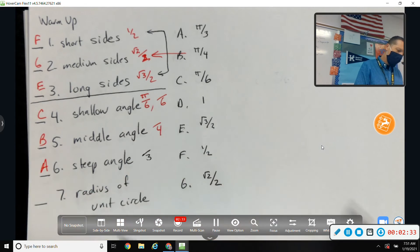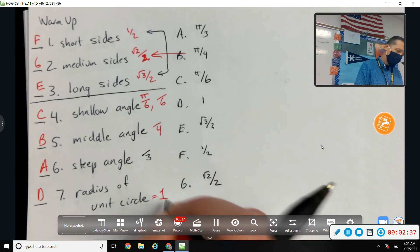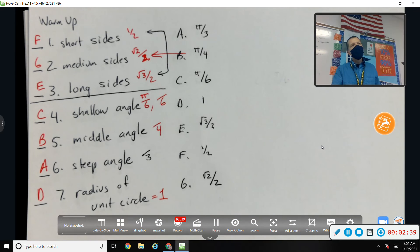That would be A. And, of course, the radius of the unit circle is 1. All right, again, that's how you think through the unit circle without having to draw the whole thing. You put the triangle in the right spot, label the sides, and then pick what you need.